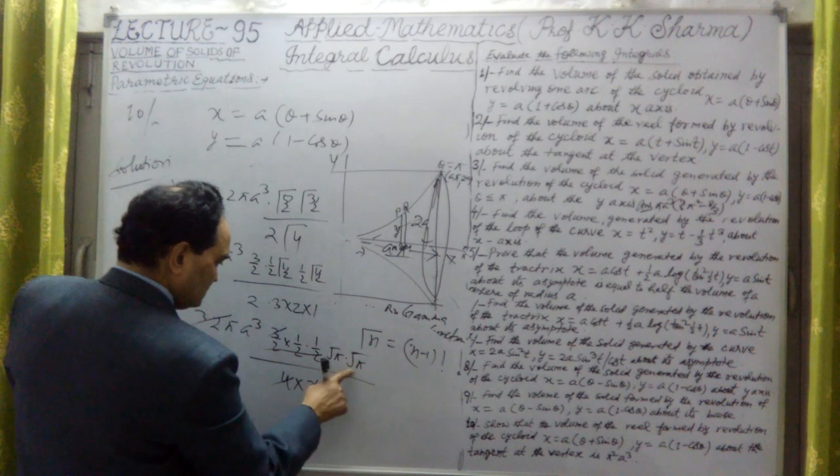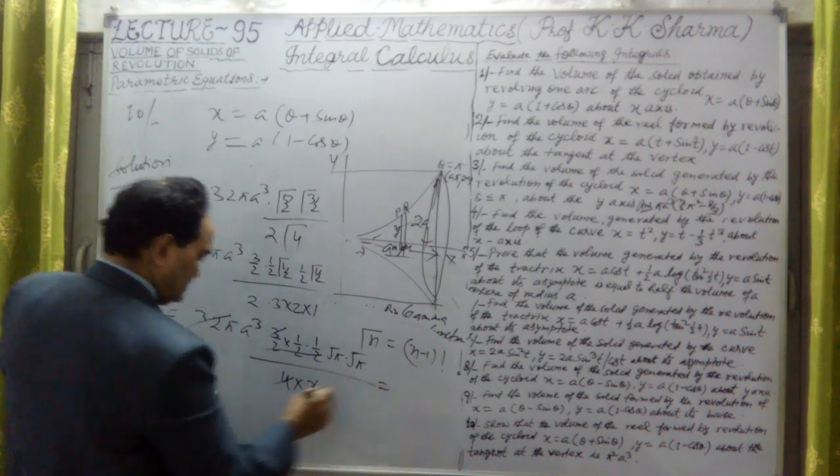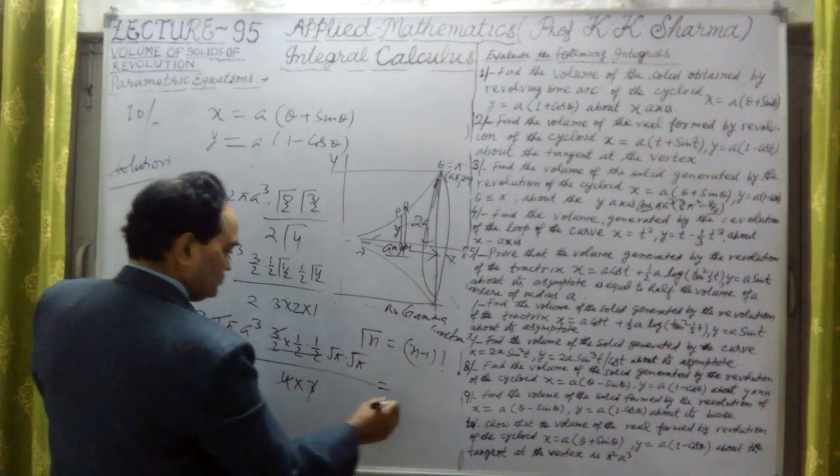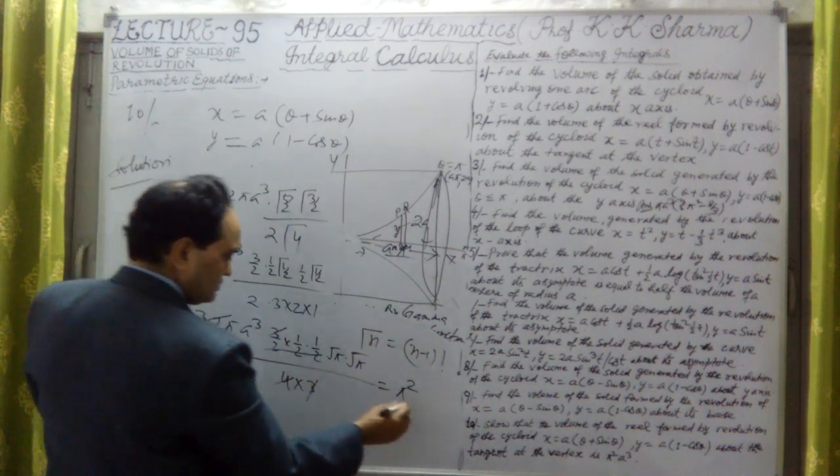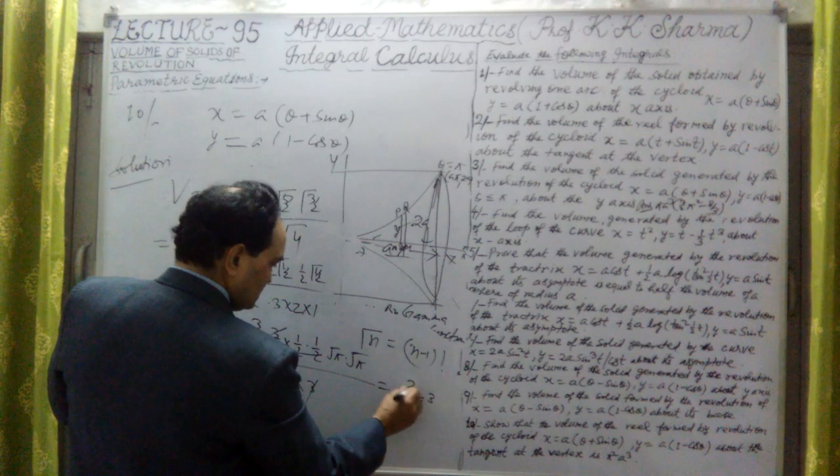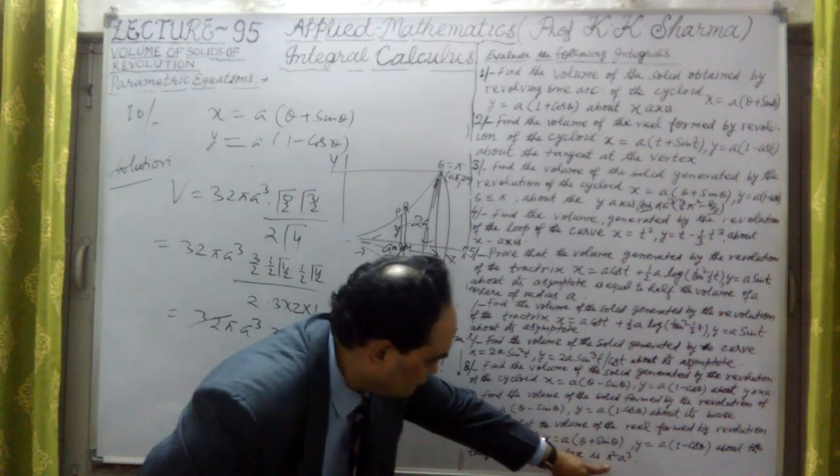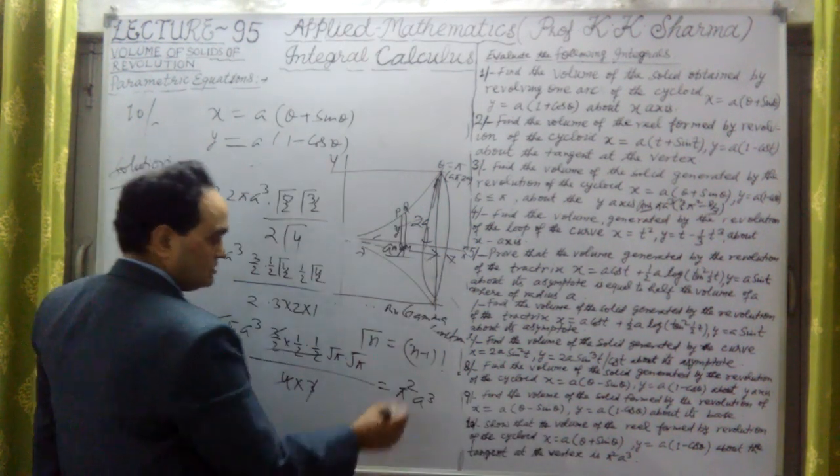What is left? Square root pi and square root pi is pi. So this is pi squared into a cubed. This is the answer here, pi squared a cubed. Finally this is the answer, hence proved.